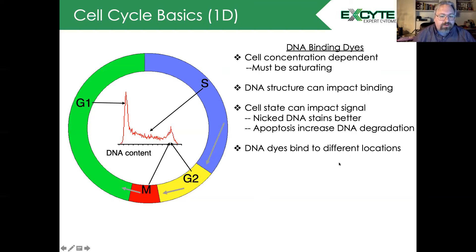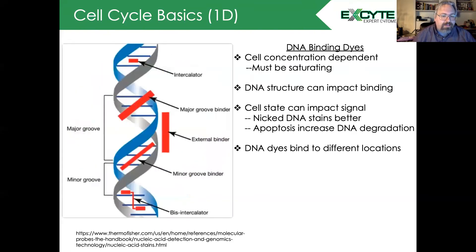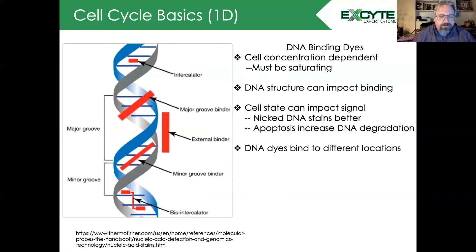DNA dyes can also bind to different locations. Highlighting this is an image from the Thermo Fisher website showing that we have intercalators, major and minor groove binders, and external binders, all of which have different characteristics when used for cell cycle analysis.